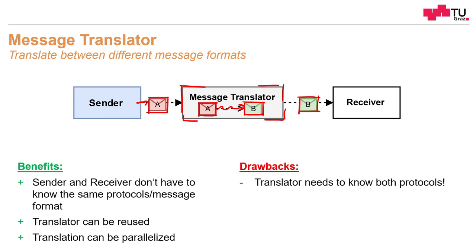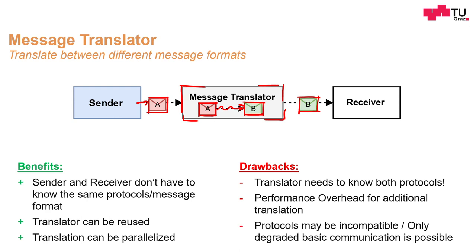What are the drawbacks? Of course, the translator needs to know both protocols. If one protocol changes, the translator also has to change. There may be some performance overhead for additional translations — for example, if we translate from JSON to XML, we have to read the content of the JSON file and convert it into XML, and this adds some performance overhead. The protocols may also be incompatible, so only basic communication is possible.